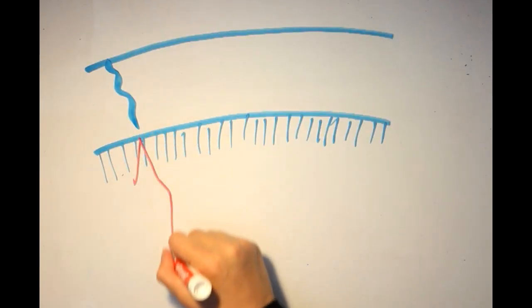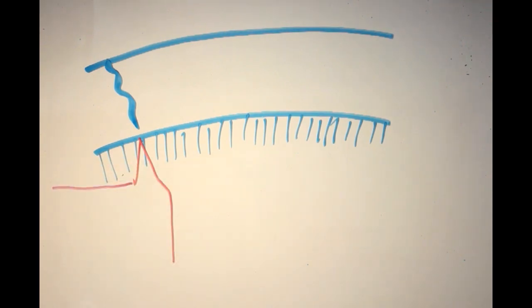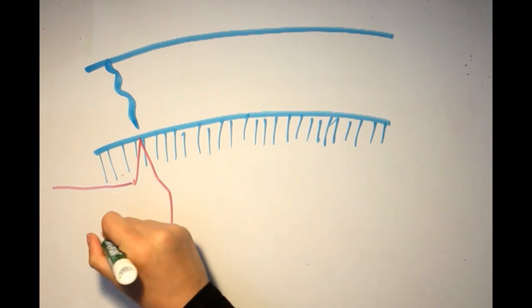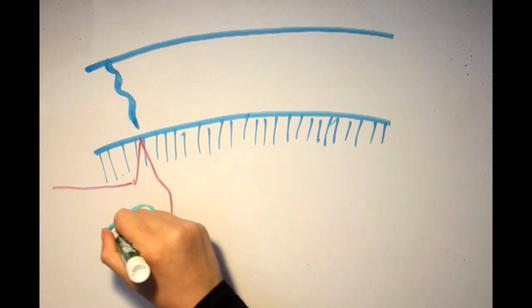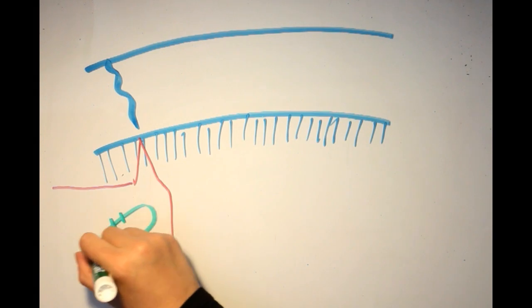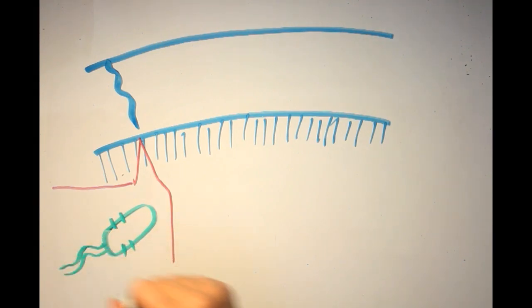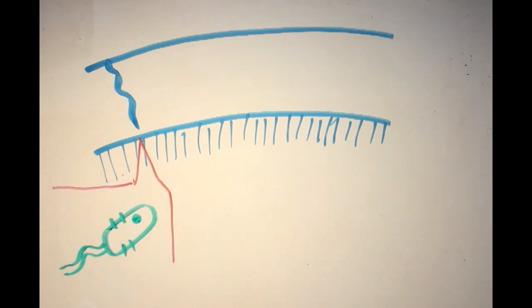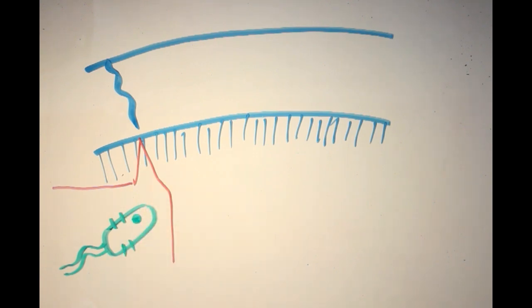The enamel lamella is a crack extending towards the dentino-enamel junction, containing abnormally high levels of organic material. This defect provides a pathway of entry for bacteria that may initiate caries, thus weakening the tooth.